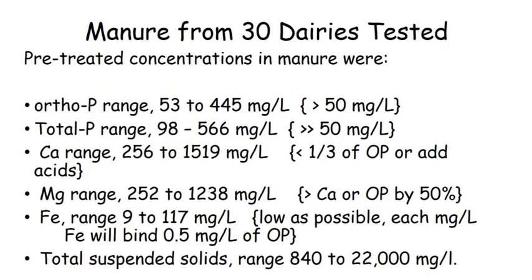More results: ortho-P ranged from about 53 to 45 mg/L — we'd like ortho-P to be greater than 50 for a good process. Total P ranged from 98 to 566 mg/L, and we want it much greater than 50. Calcium ranged from 256 to 1,519 mg/L — we'd really like this to be less than a third of the ortho-P, or we're going to need to add acids. With dairy manure we were always adding acid.